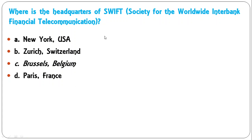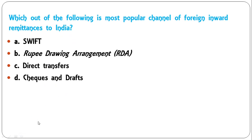Where is the headquarters of SWIFT (Society for Worldwide Interbank Financial Telecommunication)? The options are: New York USA, Zurich Switzerland, Brussels Belgium, or Paris France. The correct answer is Brussels, Belgium — C is correct. Which of the following is the most popular channel of inward remittances to India — SWIFT, rupee drawing arrangement, direct transfer, or checks and drafts? The correct answer is rupee drawing arrangement (RDA) — almost 75% of remittances to India are done through this channel. The second highest is SWIFT and the third is direct transfer.